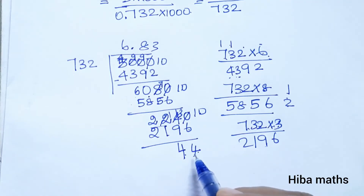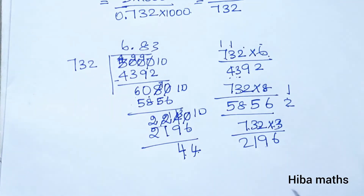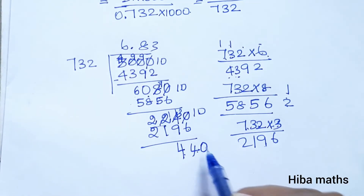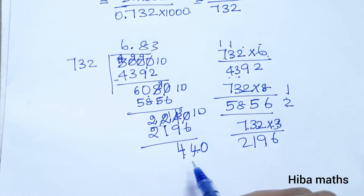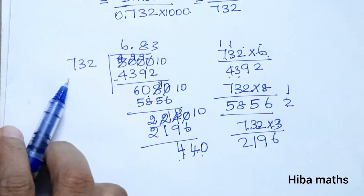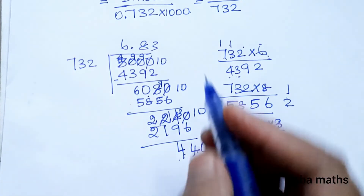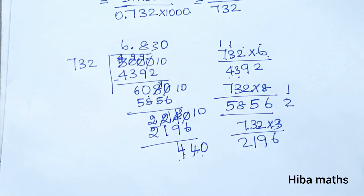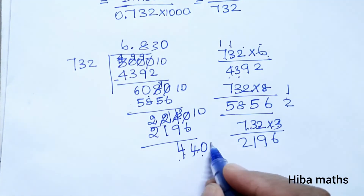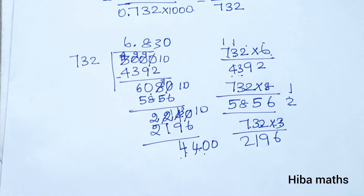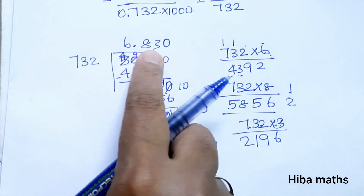Now we have 2 digits. 1 minus 0 is 0; 1 minus 2 minus 0 is 0; 1 minus — working through the subtraction steps to find the next decimal digit.